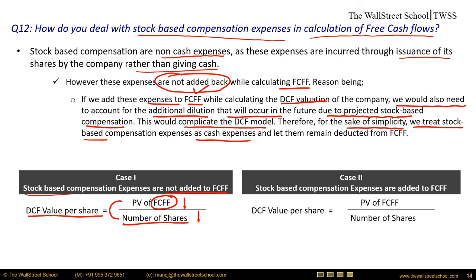Case two: stock-based compensation is added back to FCFF. Here the DCF value per share has a higher FCFF numerator, but you must also adjust the share count for future dilution from stock-based compensation, increasing the denominator. Again both numerator and denominator increase and counter each other, making the net impact negligible. To avoid this complication, we prefer case one — not adding back stock-based compensation and treating it as a cash expense.